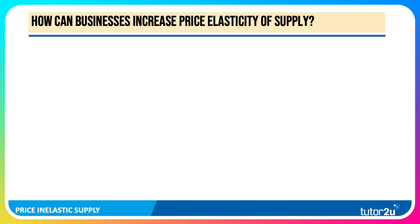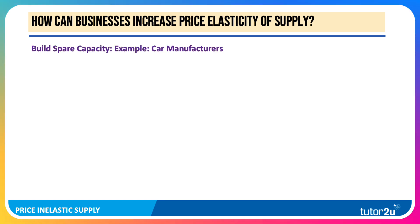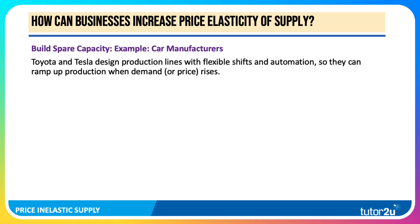Increasingly, businesses try to find ways of increasing elasticity of supply to make their production more responsive and flexible to changes in demand. For example, they might build spare capacity into their business models. Toyota and Tesla design production lines with flexible shifts and automation, so in theory they can ramp up production if and when demand or price goes up.